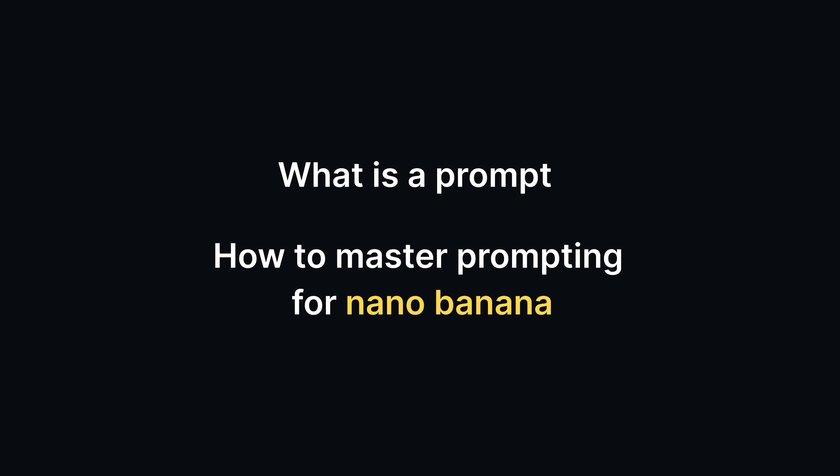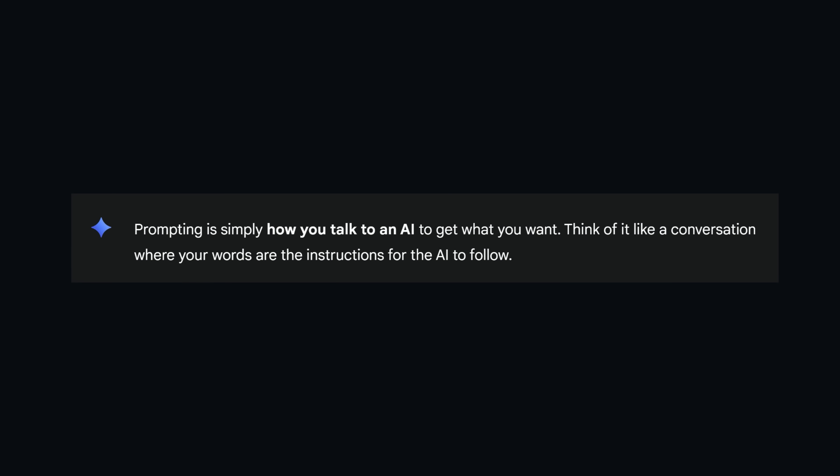We're going to start off today by looking at what is a prompt, and then we're going to go on to how to master prompting for NanoBanana. So what is a prompt? Simply put, it's how you talk to AI to get what you want. Think of it like a conversation where your words are the instructions for AI. It's just your conversation with AI, and the way you have that conversation determines if AI understands what you're saying or not.